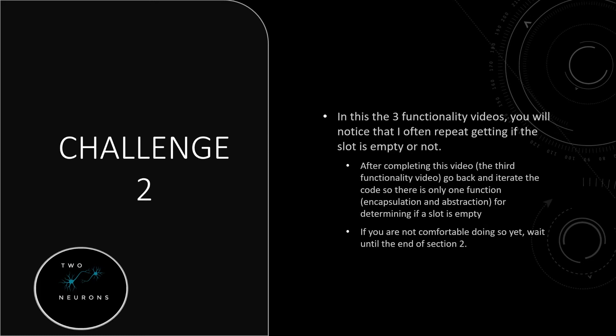For your second challenge, in this video I'll be creating output I've created numerous times before — determining if a slot is empty. After completing the third video on functionality for our inventory system, go back and iterate the code so there's only one function, giving us good abstraction, good encapsulation, and technically good polymorphism for determining if a slot is empty or not.